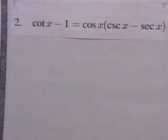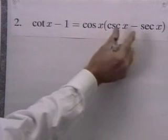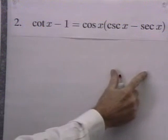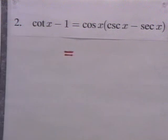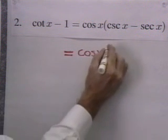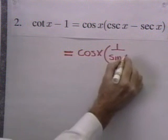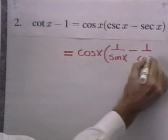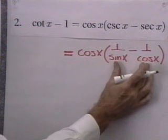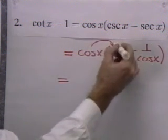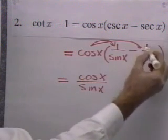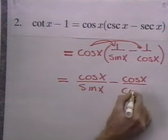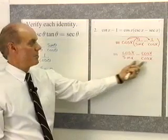I'm going to work on the more complicated side first. I can change cosecant and secant into equivalent expressions involving just sine or cosine, and I have multiplication to do — cosine x times both things inside the parentheses. So cosine x times cosecant x, where cosecant x is 1 over sine x, minus secant x, which is 1 over cosine x. Using the distributive property, cosine x times 1 over sine x gives cosine x over sine x, and cosine x times 1 over cosine x gives cosine x over cosine x. So I have cosine x over sine x minus cosine x over cosine x.